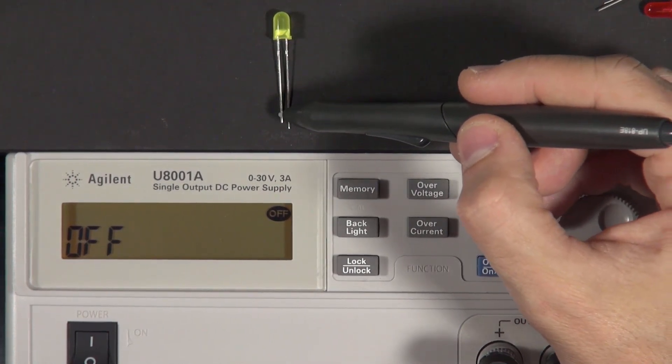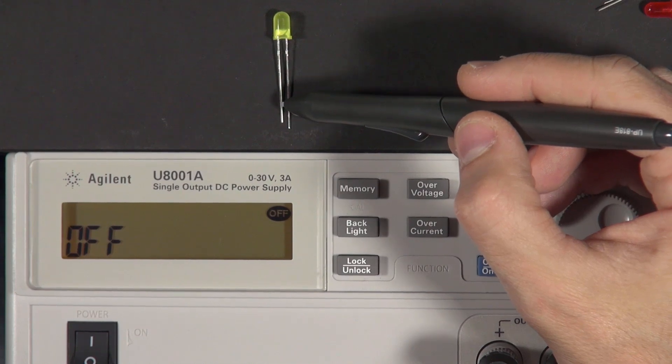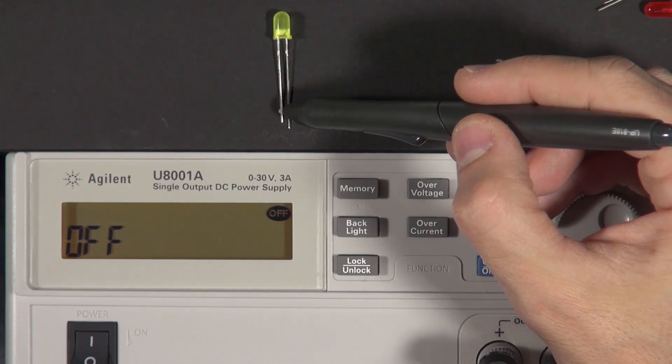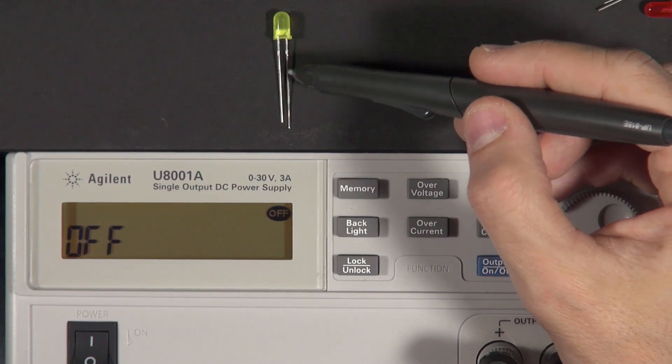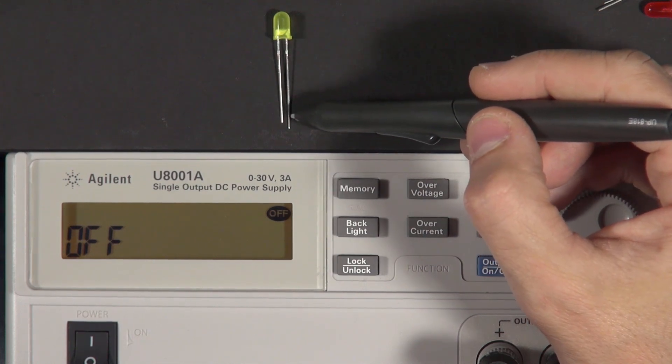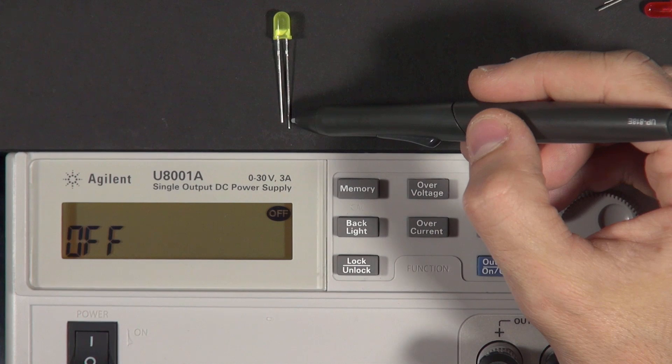And the shorter lead is what's called the cathode, which is the side that we hook to the negative, the negative side of our voltage source. And the longer lead is what's called the anode, and that's the side that we hook to the positive side of our voltage source.